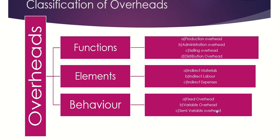Variable overheads are costs which tend to vary in direct proportion to the changes in output. However the output behaves, the variable overhead will act accordingly — the cost will be completely impacted by the volume of output. Examples include indirect labor, power, and light. The variable overhead per unit will remain fixed, but as a whole it will fluctuate.